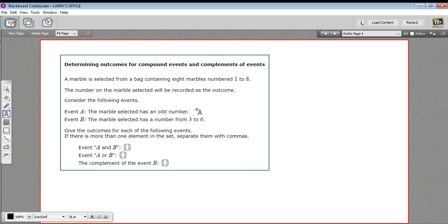I think the best first thing to do here is just write out what event A and B are. So the outcomes for event A, if it's an odd number and we've got marbles numbered one through eight, it's going to be one or three or five or seven. Those are all the odd numbers between one and eight. And then event B says the marble selected has a number from three to six, so that's just going to be three, four, five, six. There is event A and event B.